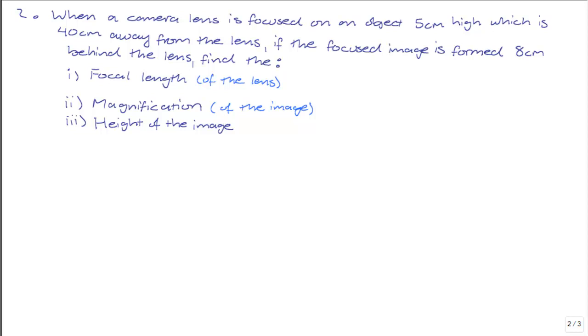So let's write down the information we're given. An object, which is the target of this camera lens, is 5cm high. So we know that the height of the object, HO, is equal to 5cm. The object is 40cm away from the lens. This is our object distance, U. So U is equal to 40cm.